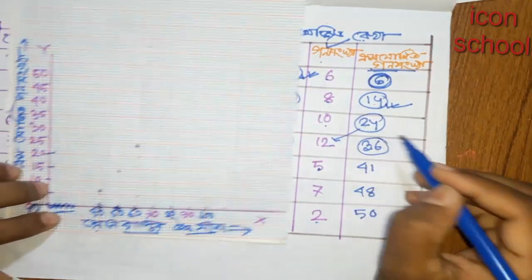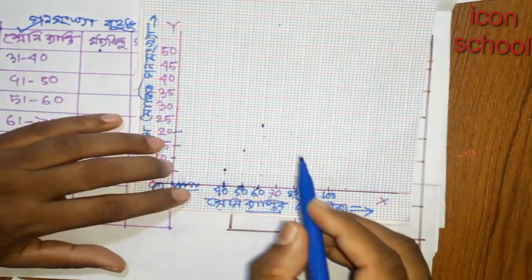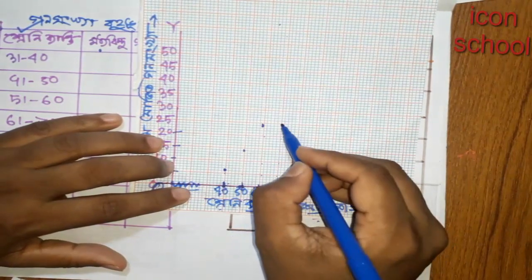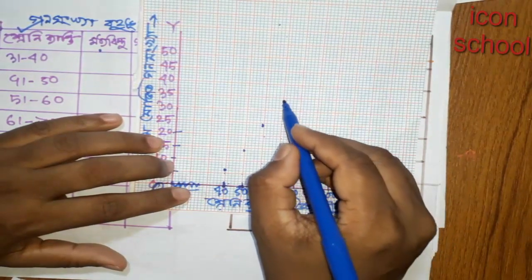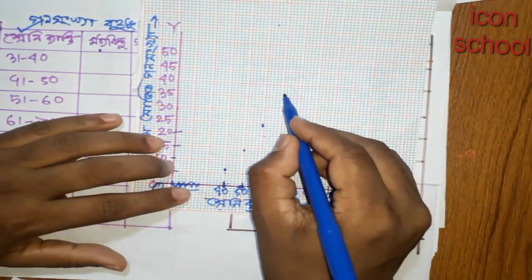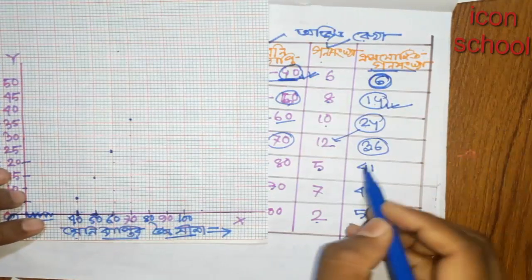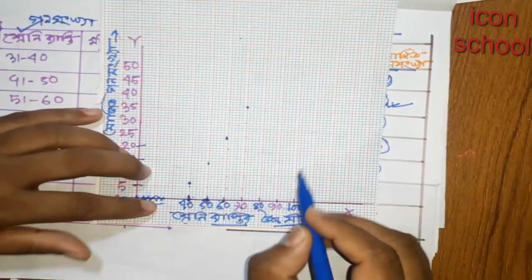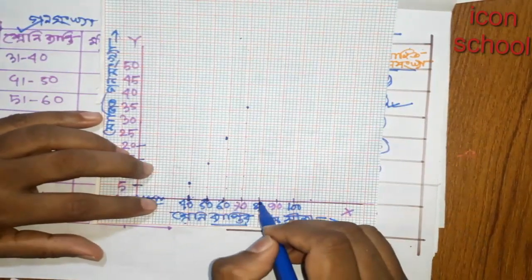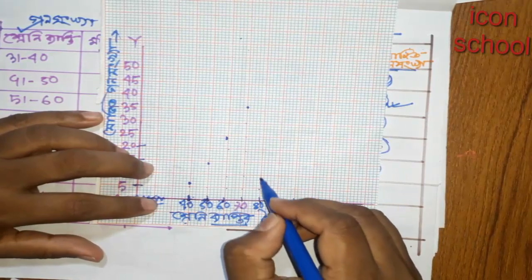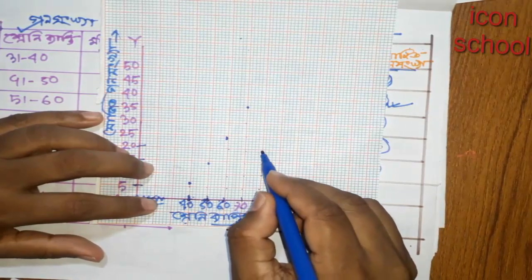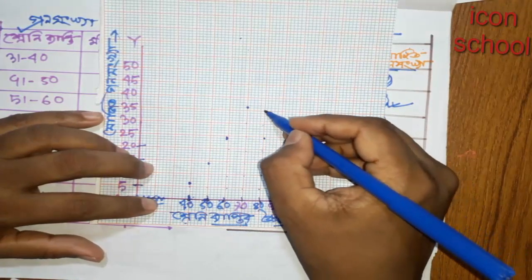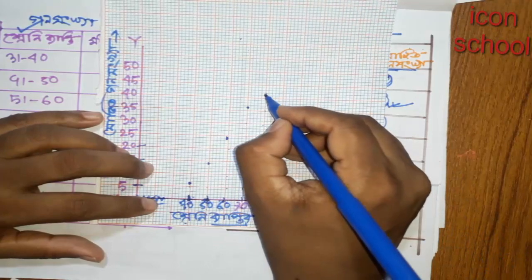Then we have 34. 5, 10, 25, 25, 35, 35, 35. Then we have 41. Here we have 41. 5, 10, 25, 25, 35, 35, 35. This is 41.